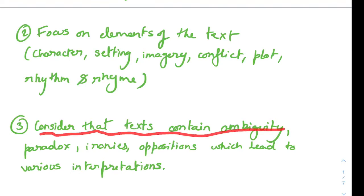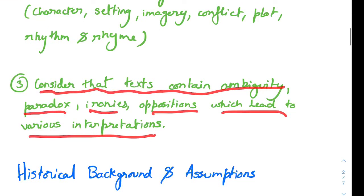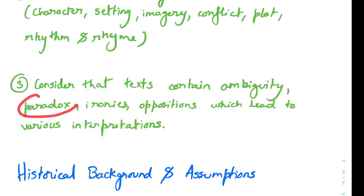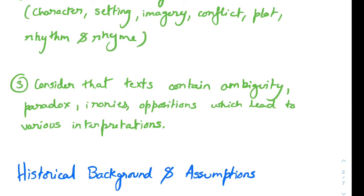The third position is to consider that texts contain ambiguity, paradox, ironies, and oppositions, which lead to various interpretations. We don't just look at the author's background and consider his or her intention to be what the text means. Instead, we look at the text separately and examine everything within it — for example, paradox or irony and oppositions — and from this we can arrive at various other interpretations.